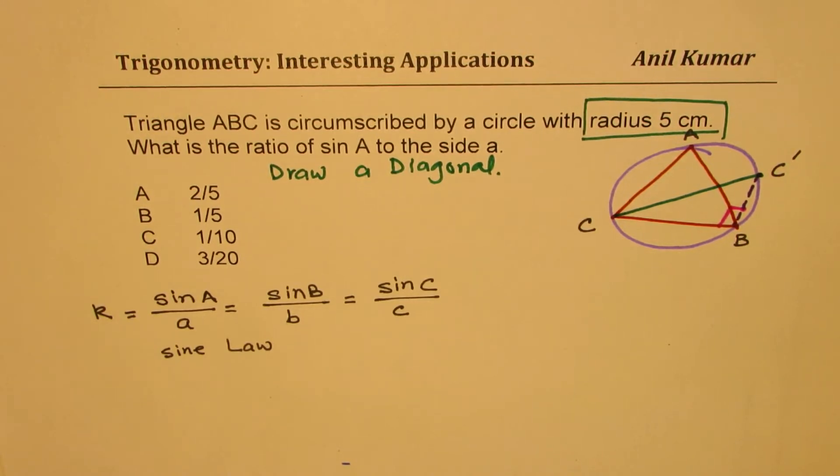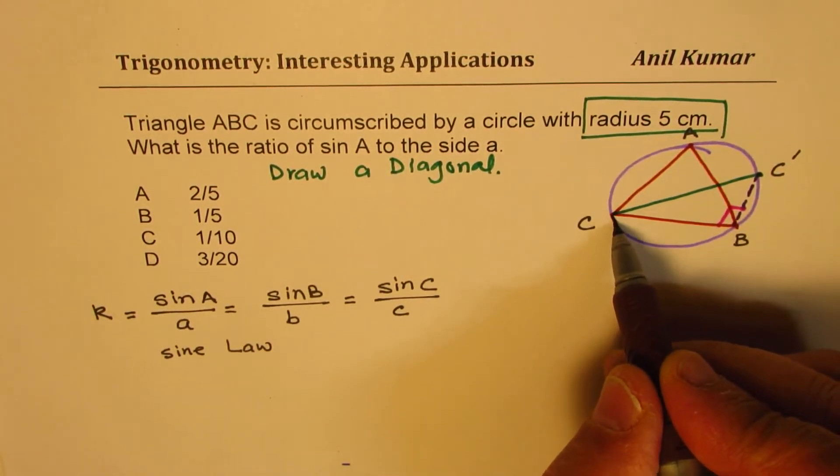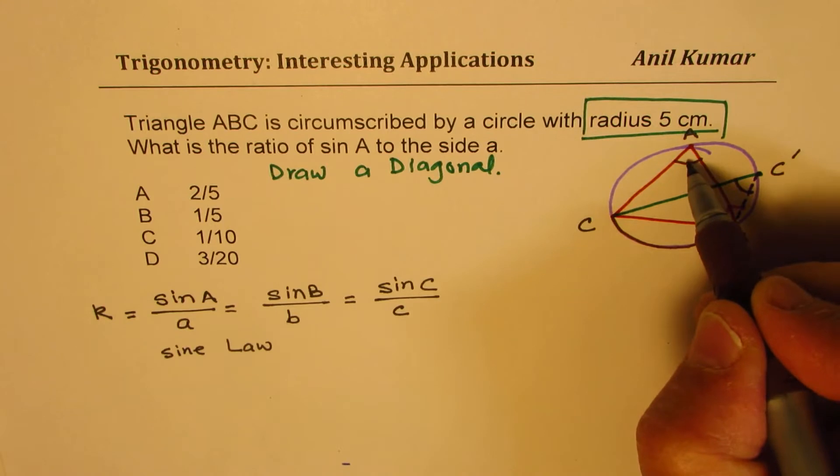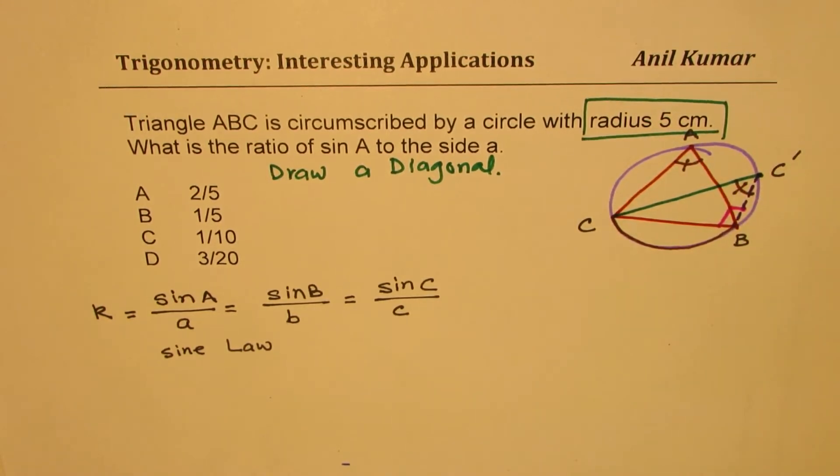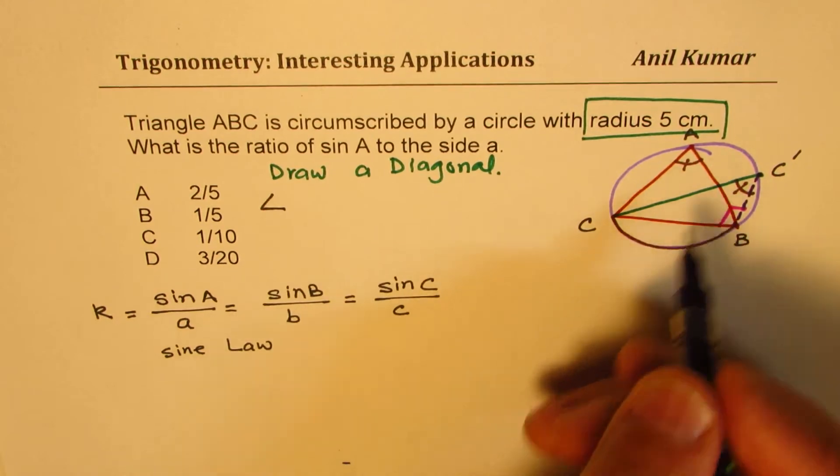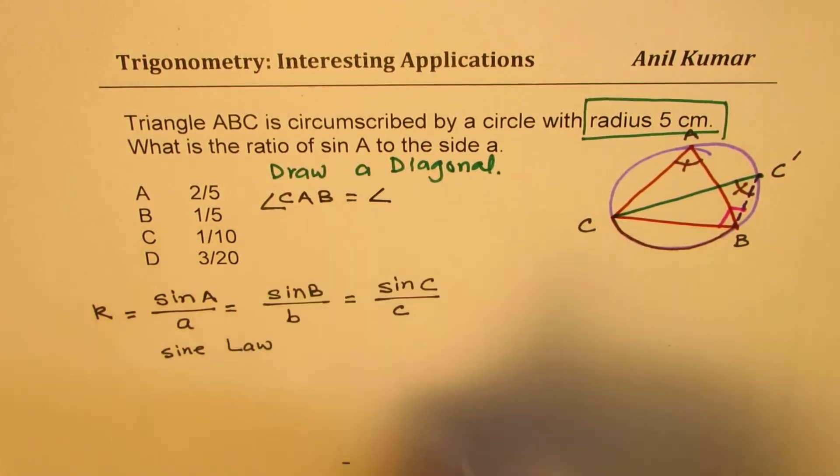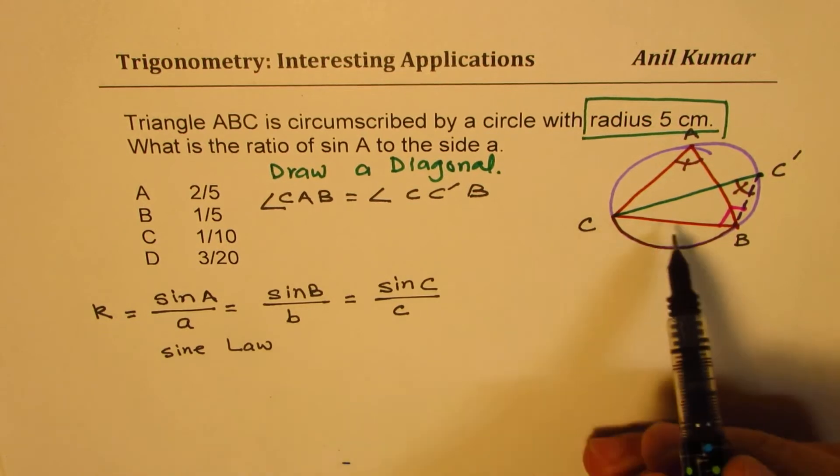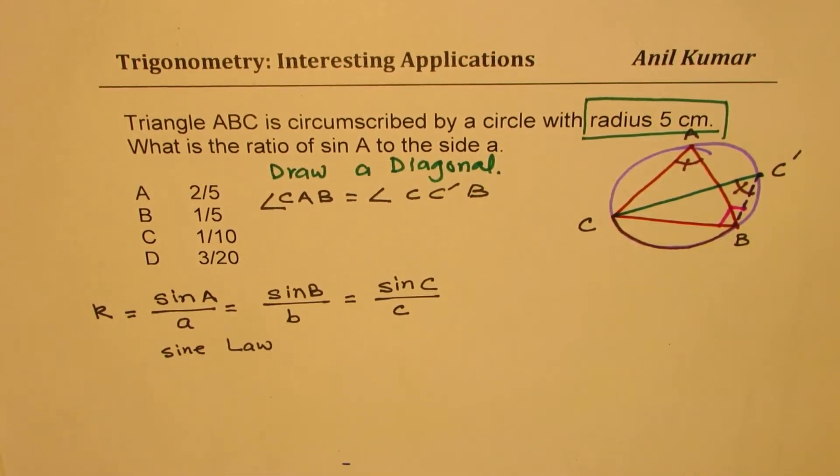Now there's another very interesting thing to look at. And that is going to help us to solve the question. That is to say that you see this arc CB, it is subtended at angle A and also at angle C. So these two angles should be equal. So we know the angle CAB is equal to angle C C dash B. Since they have the same arc CB. So these two angles are equal. Now that should give you the solution to the question.